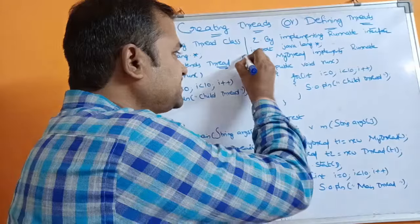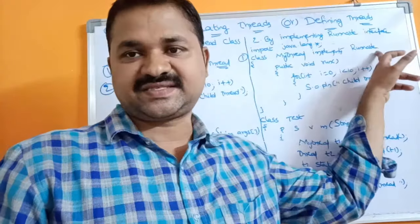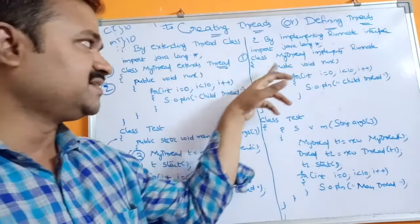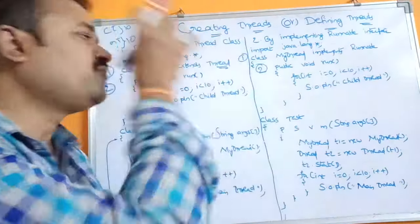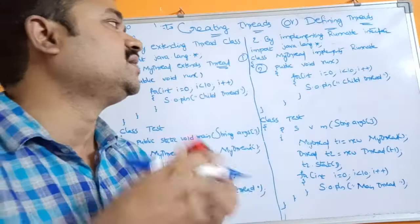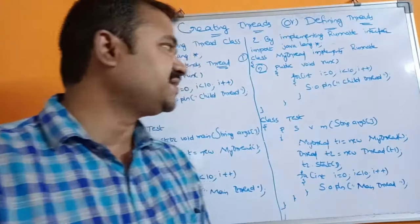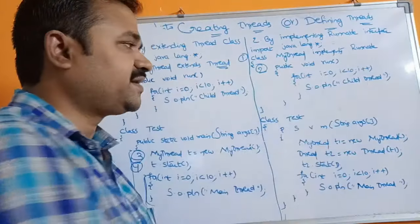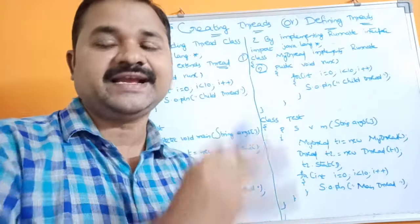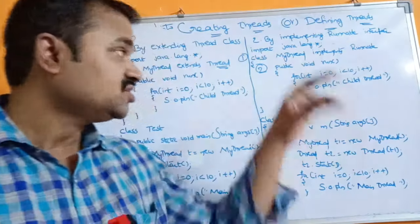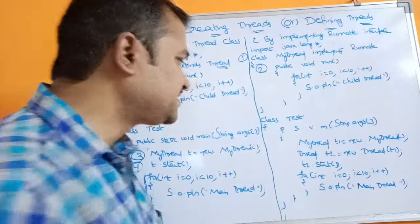The first step is to create a class by implementing the Runnable interface. The second step is to provide the body for the thread by writing the definition for run(): public void run() { for (int i = 0; i < 10; i++) System.out.println("child thread"); }. The child thread message will be displayed 10 times.